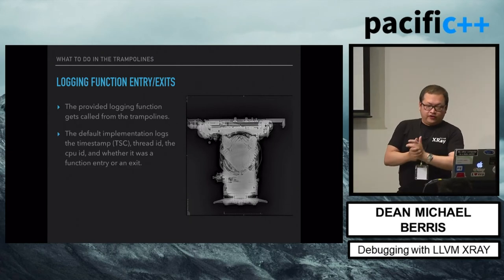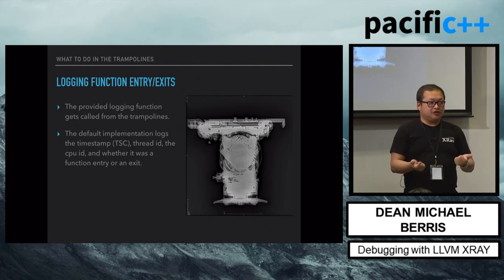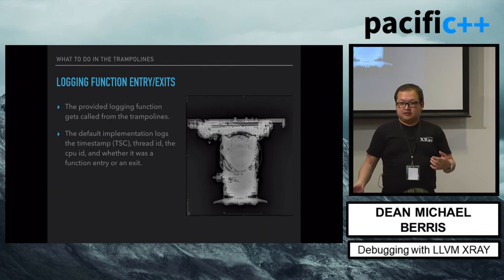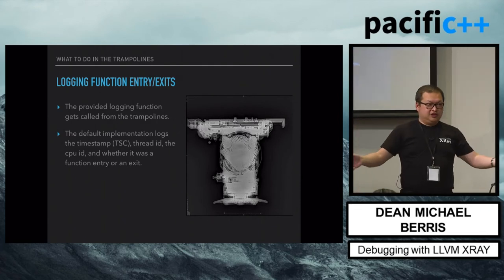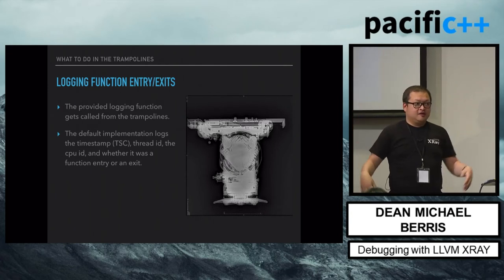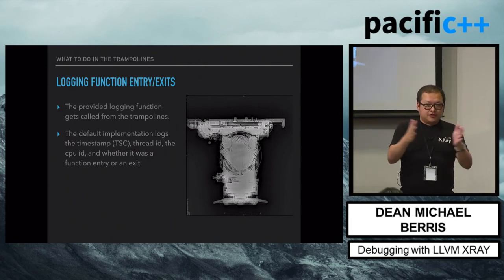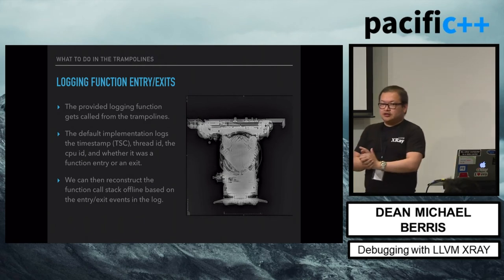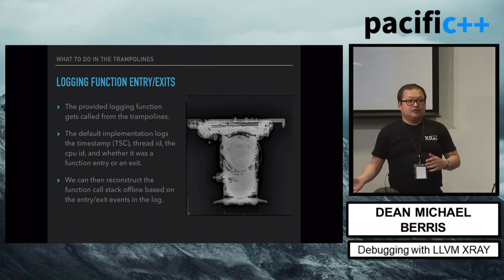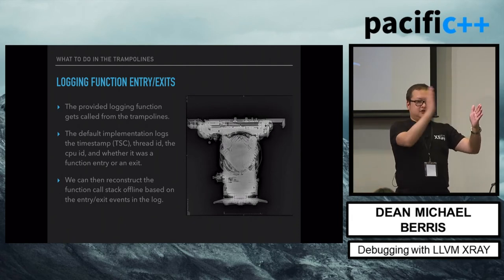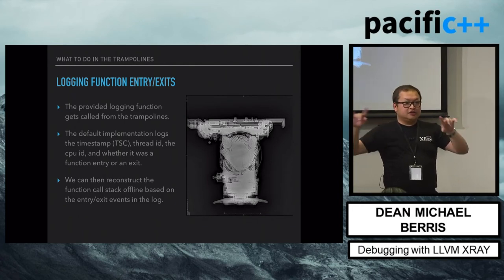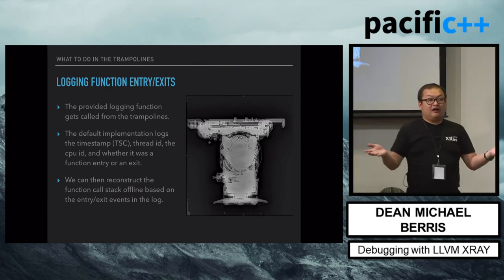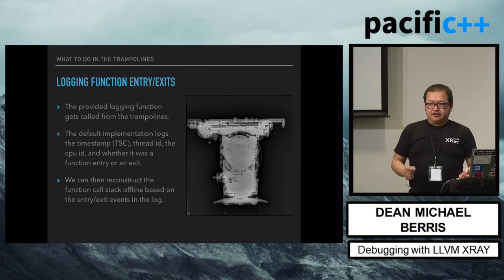The default implementation uses timestamp counters. You do RDTSCP in x86-64 to get both the CPU ID and the timestamp, and then whether you entered or exited. There's one implementation that writes 32 bytes. We want to know when a function was entered and exited, and then we can reconstruct the call stack of instrumented X-Ray functions offline. We can say: we entered function 1, then entered function 2, then function 3, then exit 3, exit 2, exit 1 — with timestamps. That gives us a call stack, and we can do the math to figure out how long things took at function-level granularity.